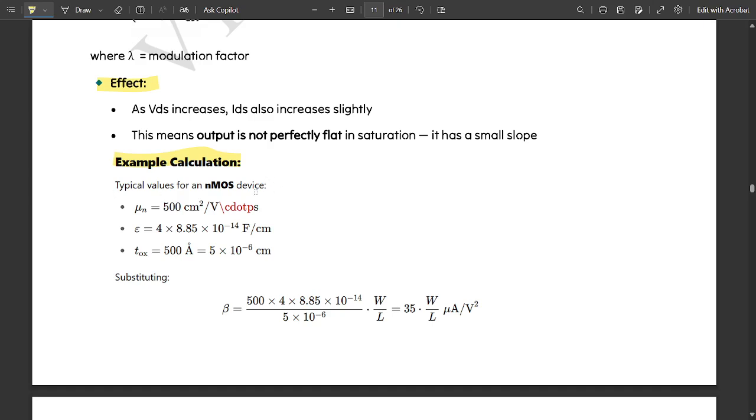Example calculation here. These are some of the typical values for NMOS device. The value of mu n is 500 centimeter square per V. Epsilon is 4 into 8.85 into 10 to the power minus 14 farad per centimeter. The oxide thickness is 500 angstrom.